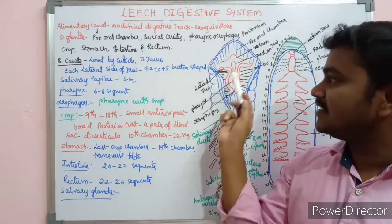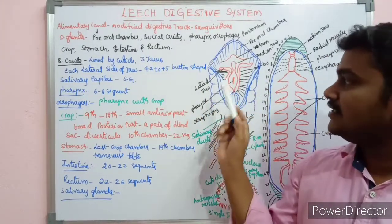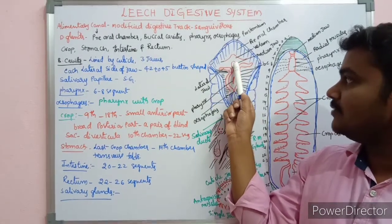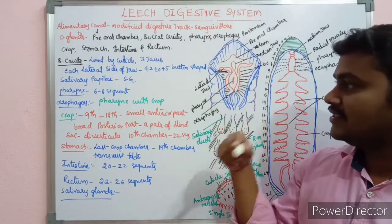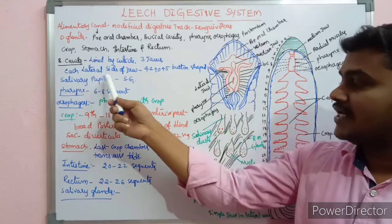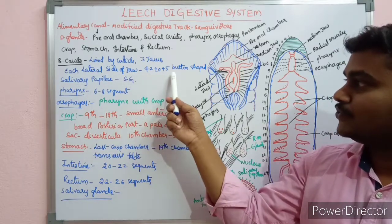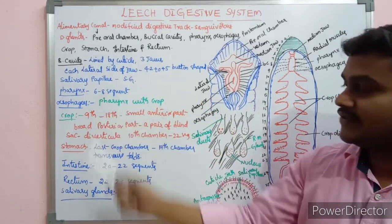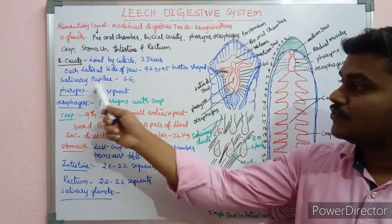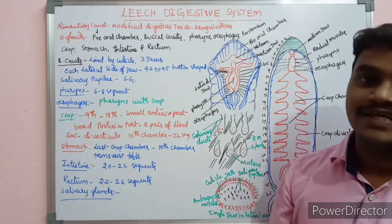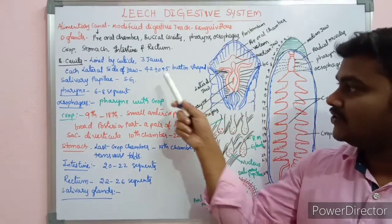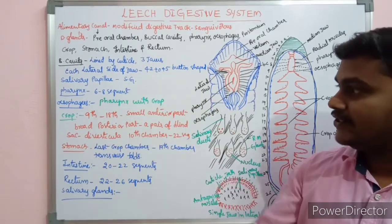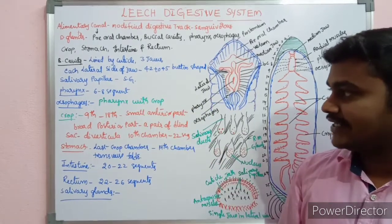There is a presence of three jaws: one median jaw and two lateral jaws. Each lateral jaw contains 42 to 45 button-shaped salivary papillae, which are opened into the salivary glands.